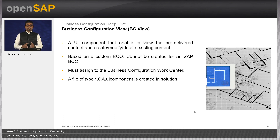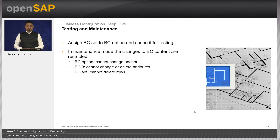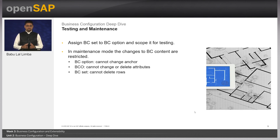End users can access your fine tuning activity from the Business Configuration work center, so you need to assign your fine tuning BC view to the Business Configuration work center. A BC view is represented as a UI component with extension dot UIComponent in the add-on solution. Once your BCO, BC set, and BC view are ready, the content needs to be assigned to the business configuration option discussed in the last unit, so that the content is available in the tenant when the option is scoped. After assigning, scope the option and test your business configuration content.